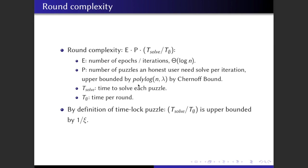So overall, the distributed protocol has run complexity which is equal to the number of epochs, which is theta log n, times the number of puzzles we need to solve per iteration. This we can bound by polylog of n by Chernoff bound, and then times the time to solve each of the puzzles, divided by the time per round. By the definition of time-lock puzzle, if the time-lock puzzle is epsilon-hard, then time of solving divided by the time of a round is upper bounded by 1 divided by epsilon. So overall, this just reduces to polylog of n and lambda.